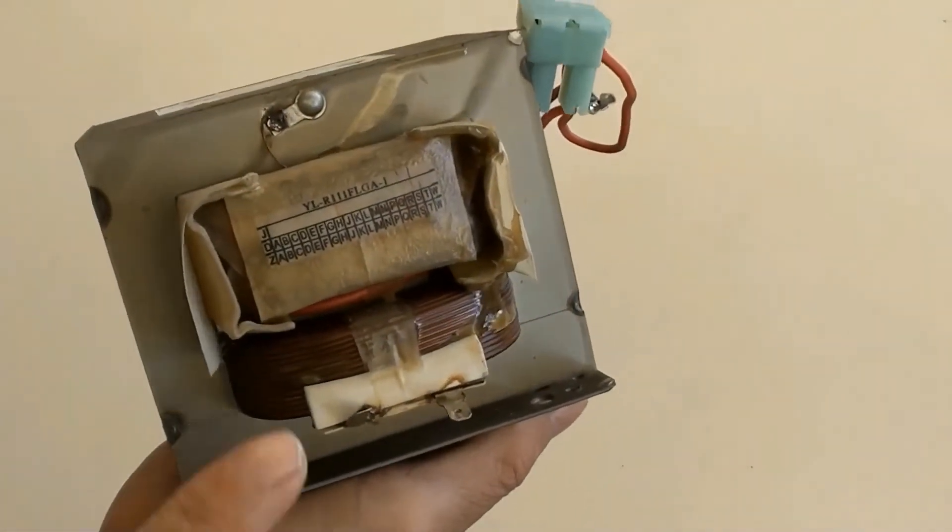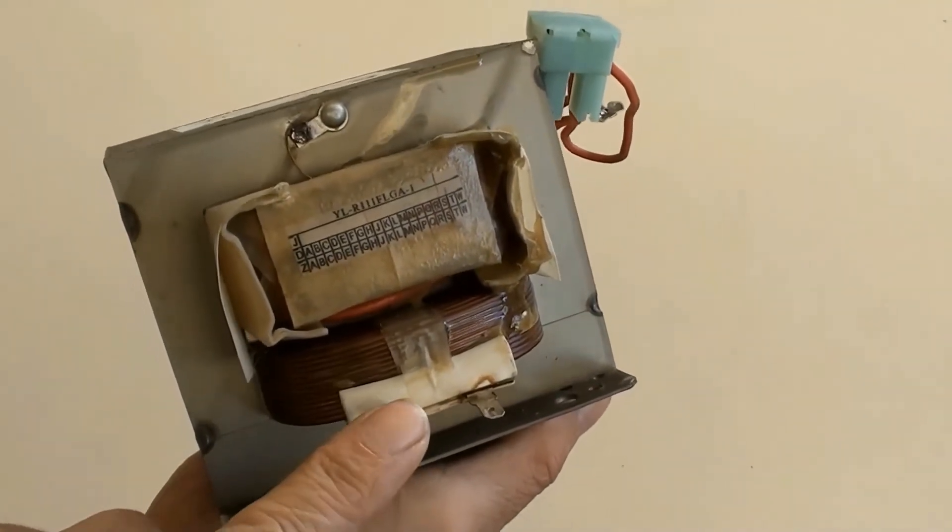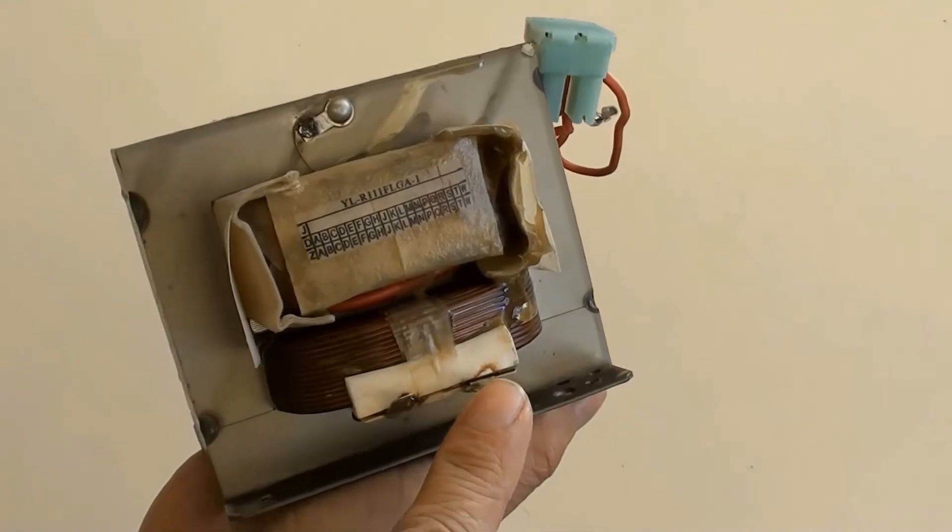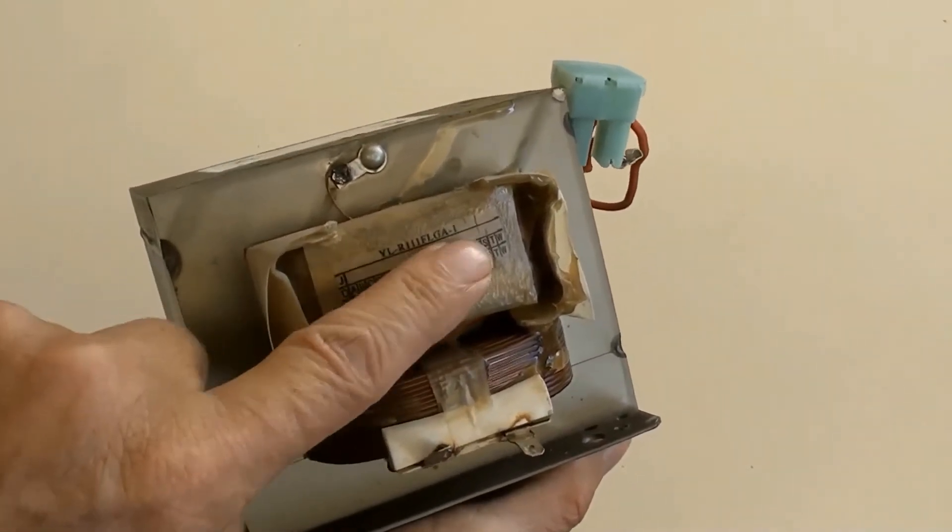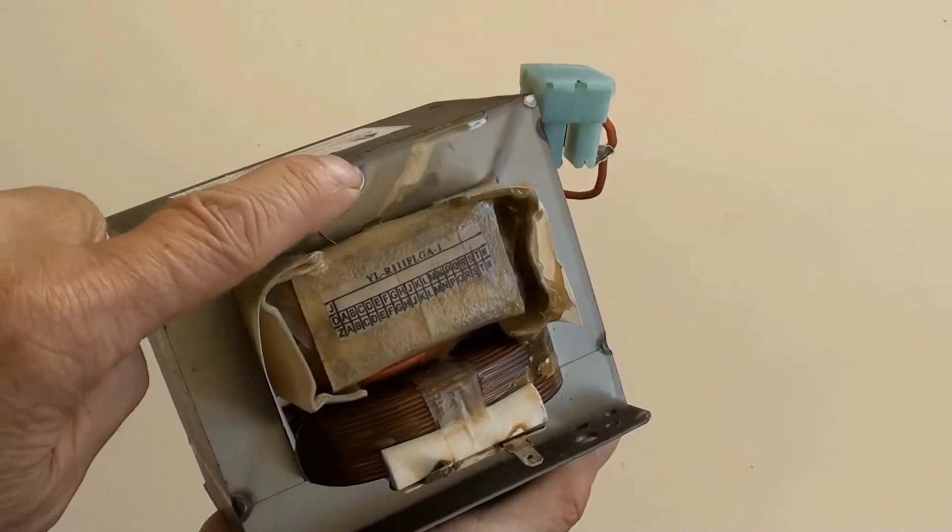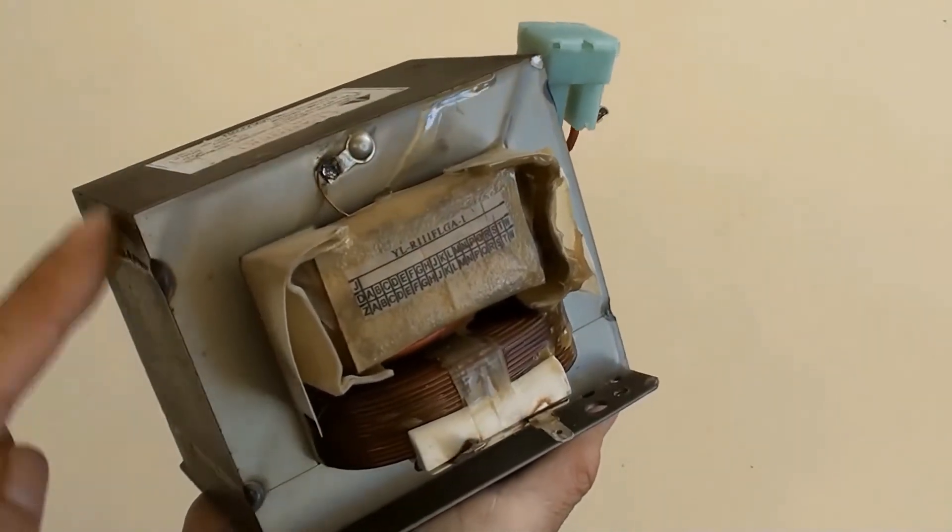This is a typical transformer from a microwave oven. That is the primary winding and its terminals. This is the secondary winding - one terminal is connected to the core body and the other terminal is here.